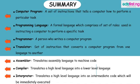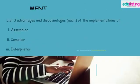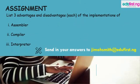From everything that we've learned, I believe we should have the necessary basics when it comes to programming and translators — what translators do and how they aid us in programming. So here's an assignment: list three advantages and three disadvantages each of the implementations of an assembler, a compiler, and an interpreter.